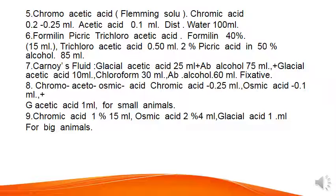Next is Carnoist fluid: glacial acetic acid 25 ml, absolute alcohol 75 ml, plus glacial acetic acid 10 ml, chloroacetic acid 30 ml, chloroacetic acid 60 ml. These are all mixed and used as fixative. Next is Chromo Aceto Osmic Acid: chromic acid 0.25 ml, osmic acid 0.1 ml, plus glacial acetic acid 1 ml. This fixative is used to fix small animals.